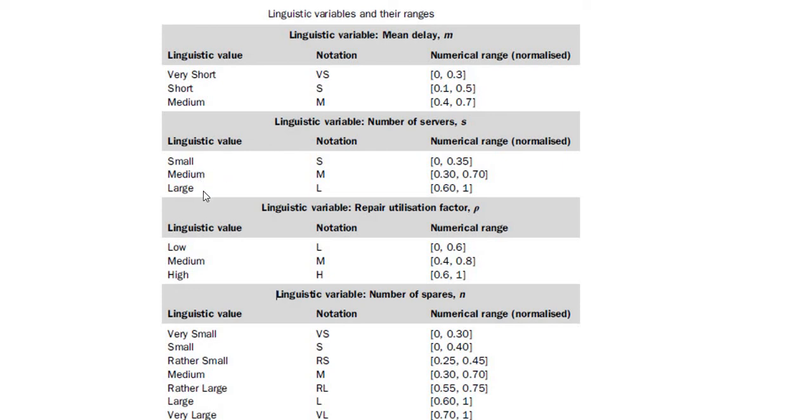Next, on small, medium, large, we have S, M, L. The numerical normalized range is 0 to 0.35, medium 0.3 to 0.7, large 0.6 to 1. The percentage of overlapping depends on your system. Normally people do overlapping between 30% of the range or it may vary depending on the application.